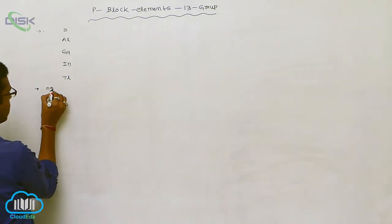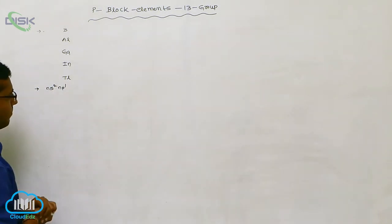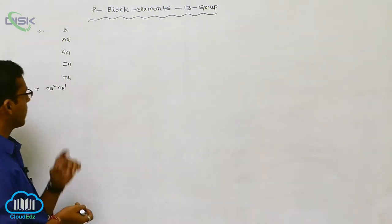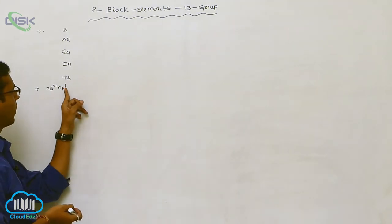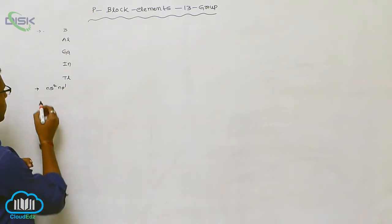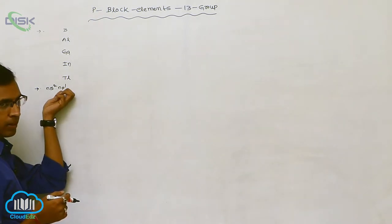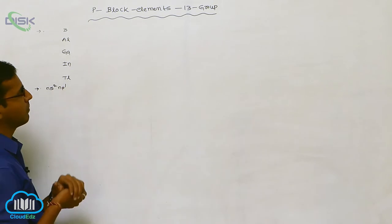This 13th A group element general electronic configuration is NS2 and P1. Means the outermost shell containing here only one electron. So means 2 plus 1, total 3 electrons. So total 3 electrons are present in outermost shell. The differentiating electron is entering into the P orbital. That is what it belongs to P block elements.